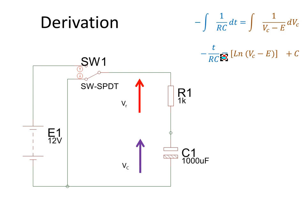Instead of minus t over RC plus C1 and plus C2, I'll bring that C across here and make this C3.